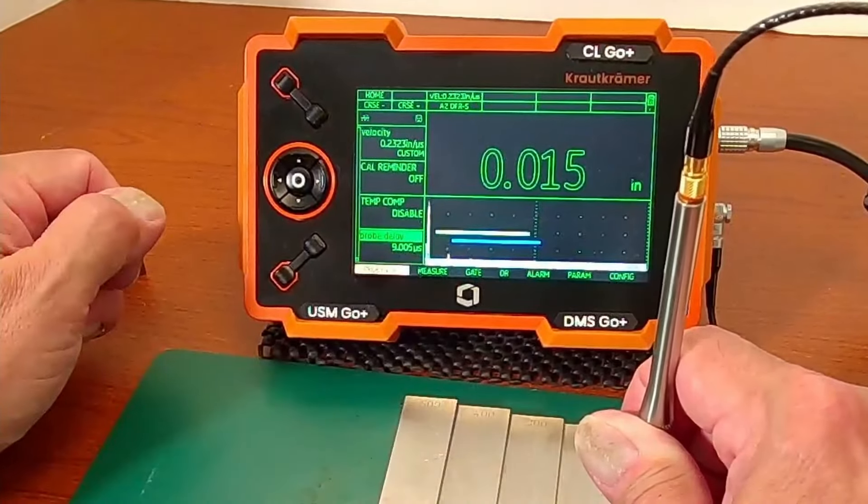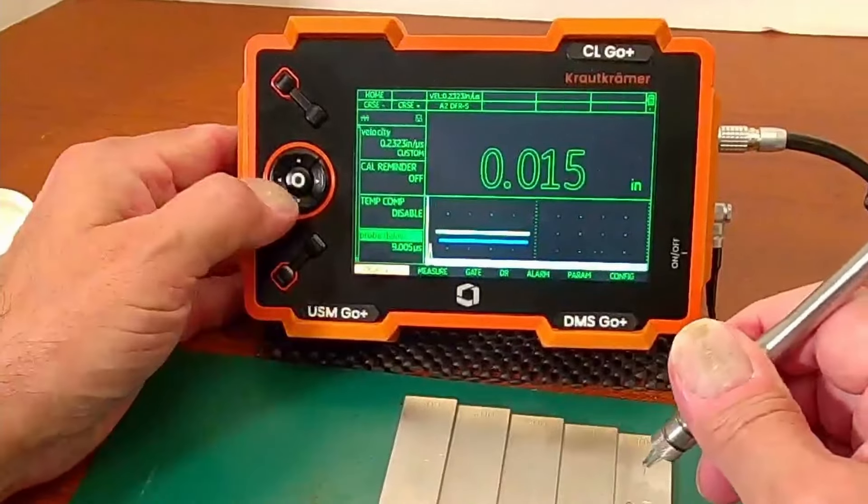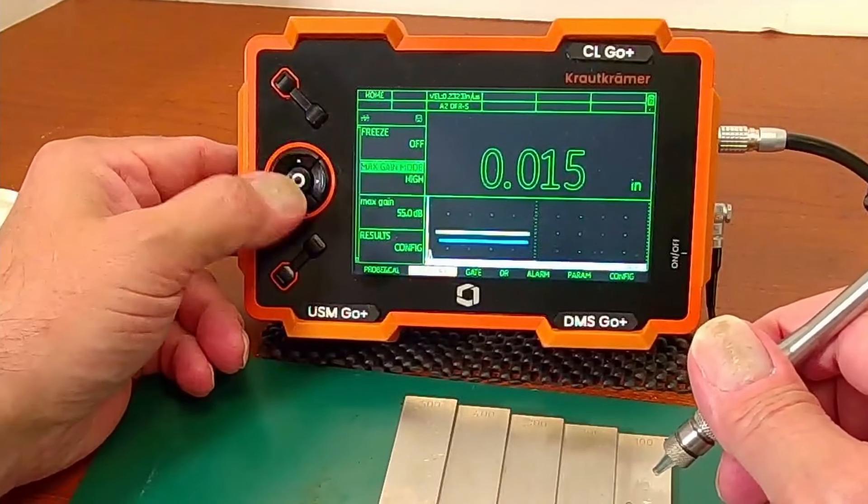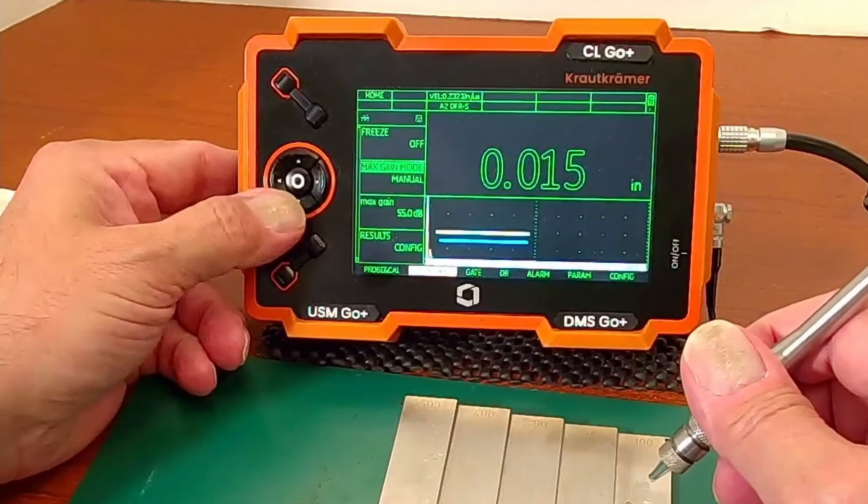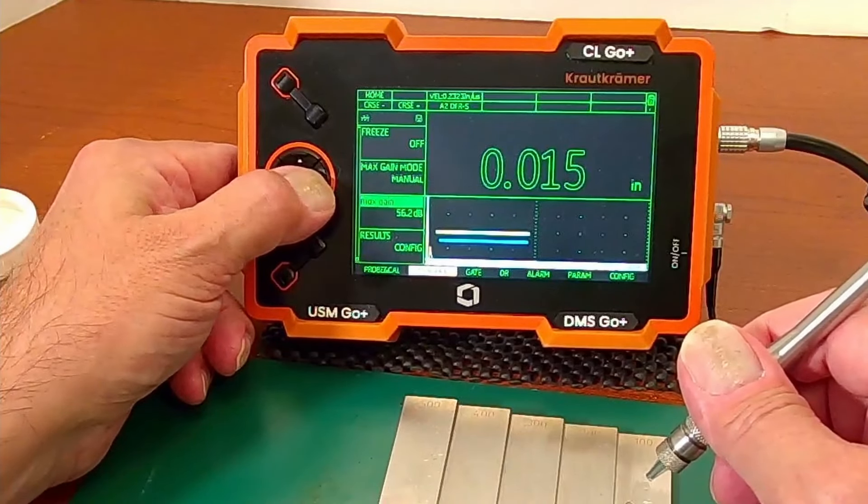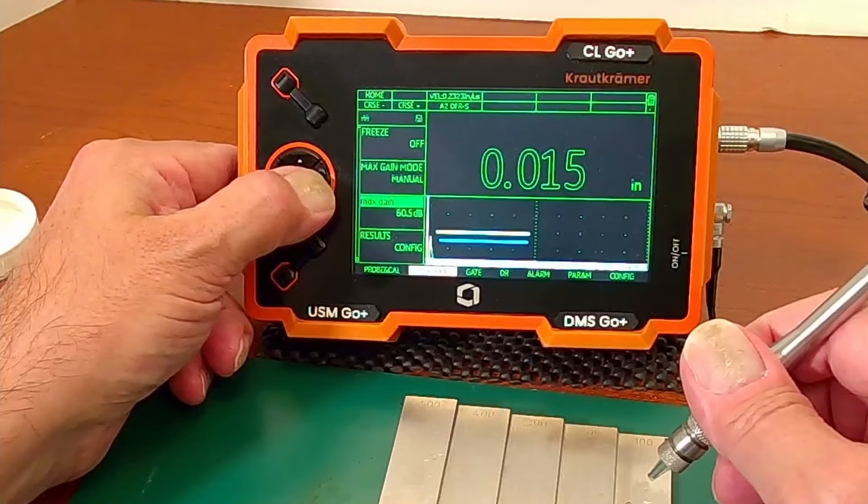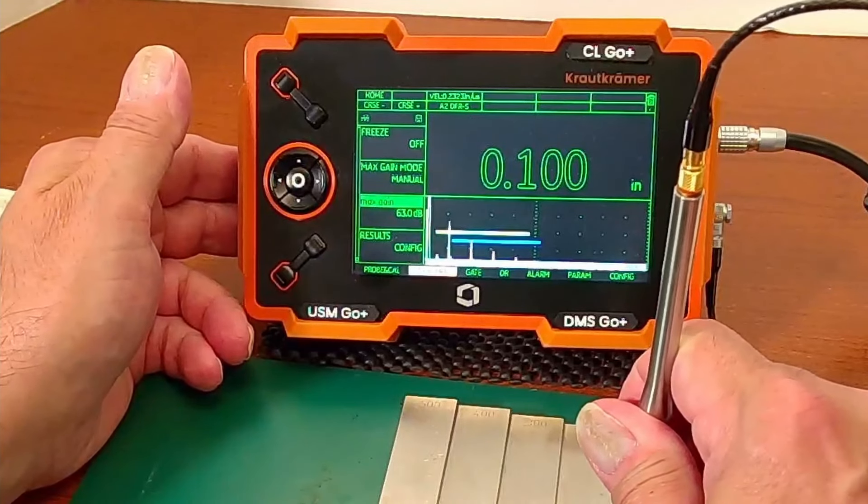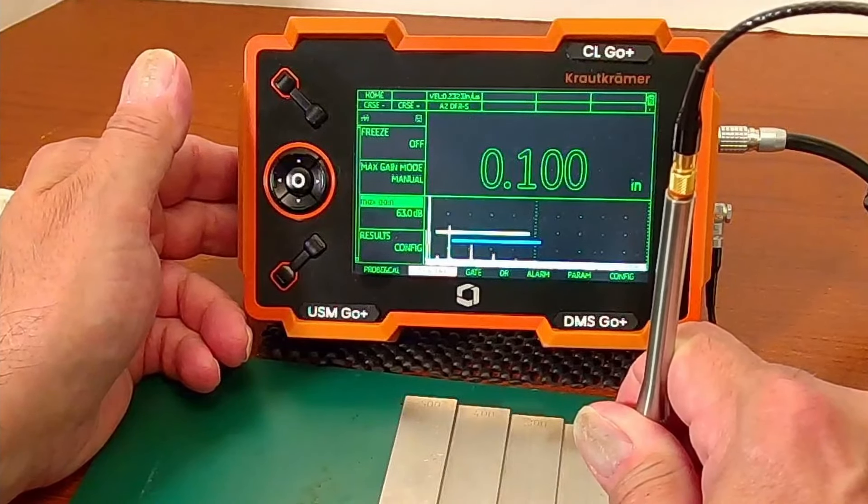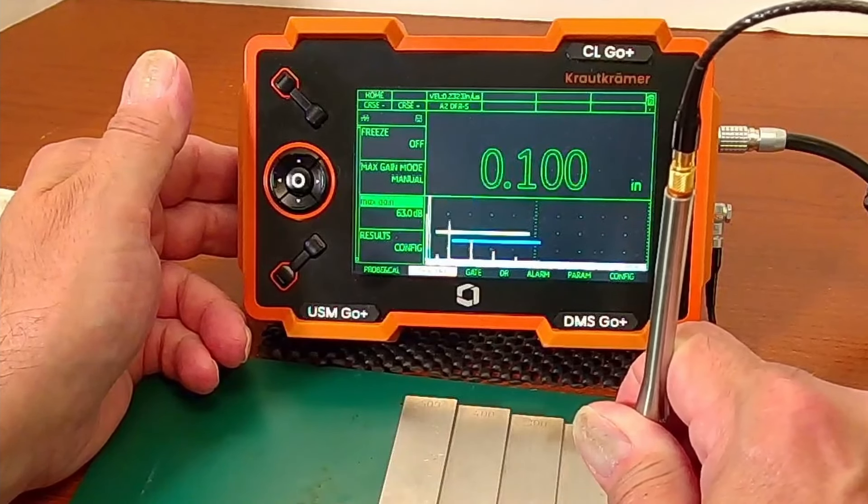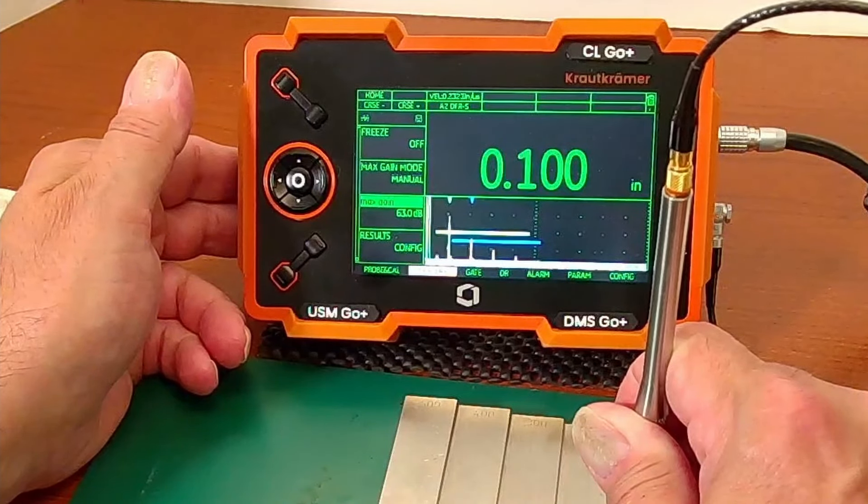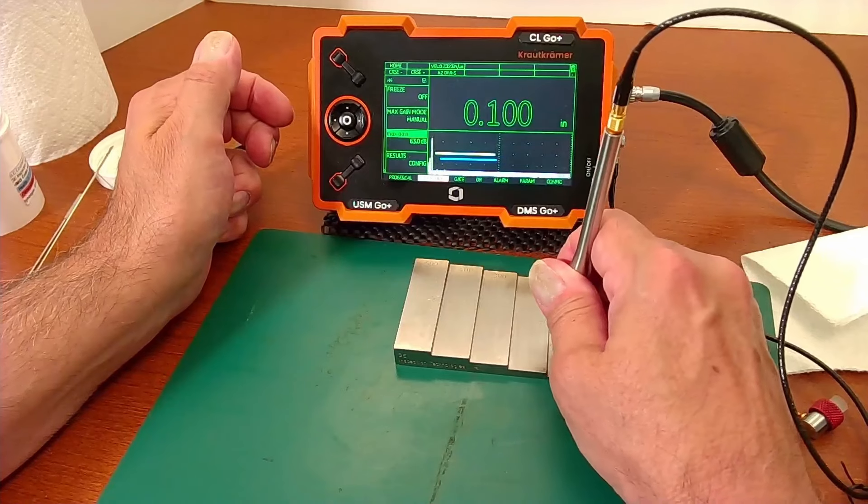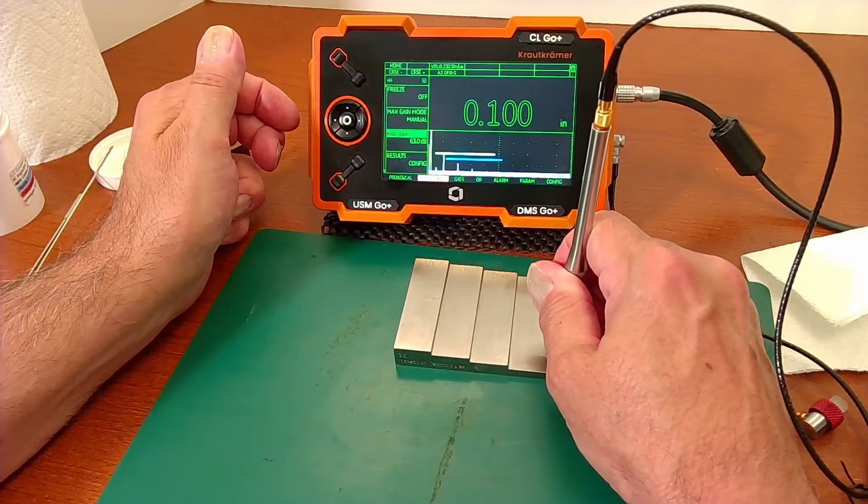So I can go into my measure menu, go up to the max gain mode, switch that to manual, and I'm going to increase my gain here to sort of mid 60s. Let's go to like 63 or so. Now you notice when I get the probe on, I get it squared up and the signals peaked up, now I'm breaking the gates and I'm getting readings. Now it is still trying to do automatic gain control, so it's adjusting the gain even after I've peaked up the probe.